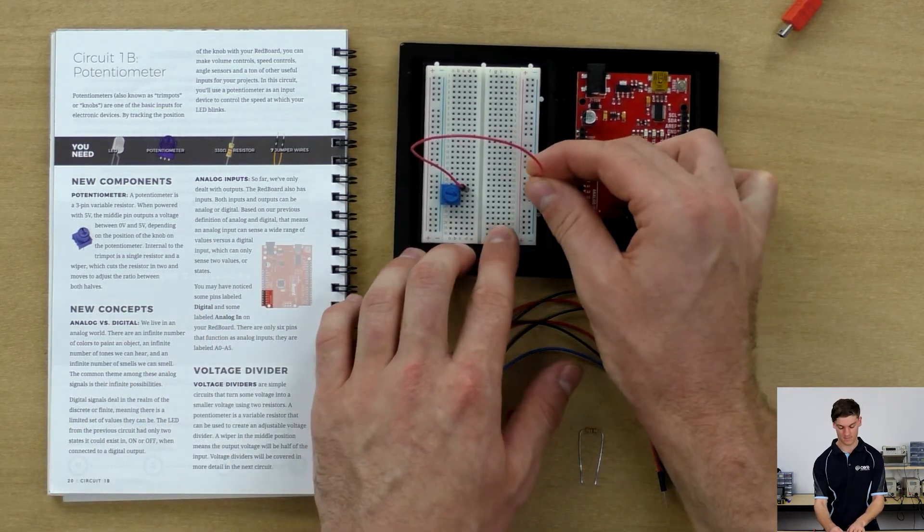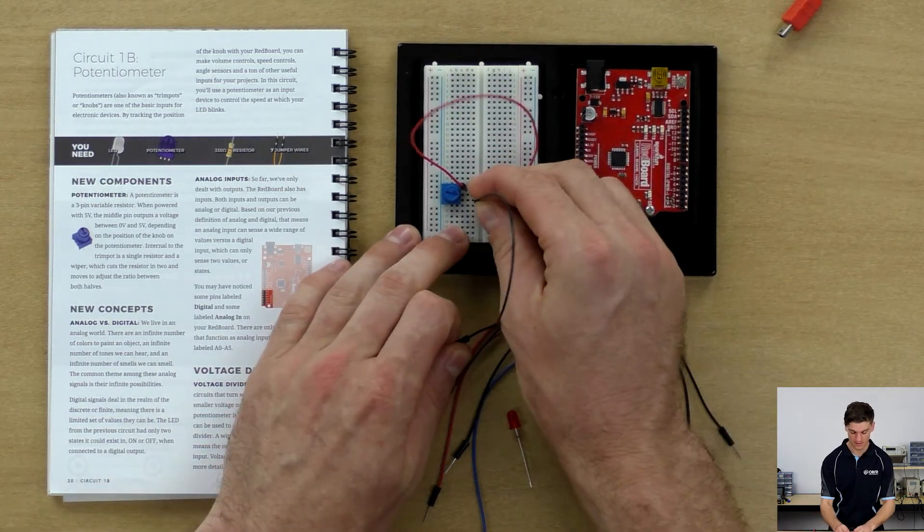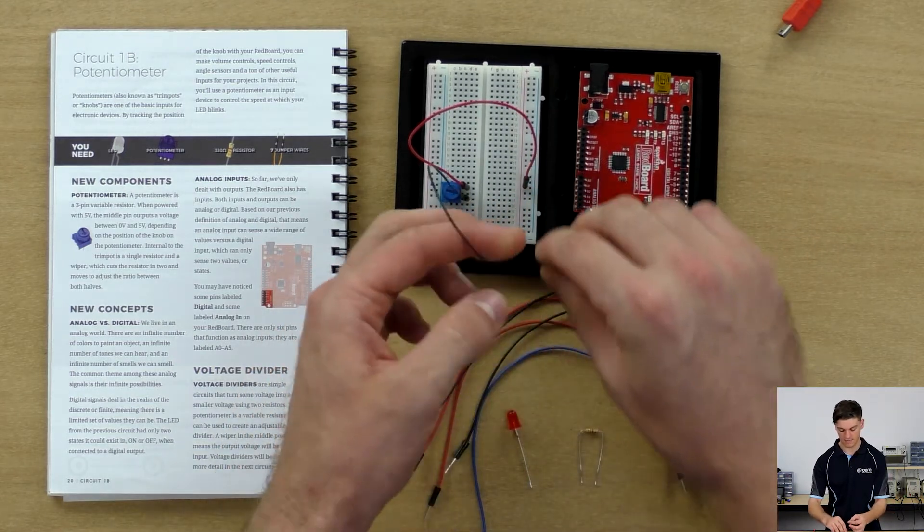We're going to connect the top pin to the positive power rail and the bottom pin to the negative power rail.